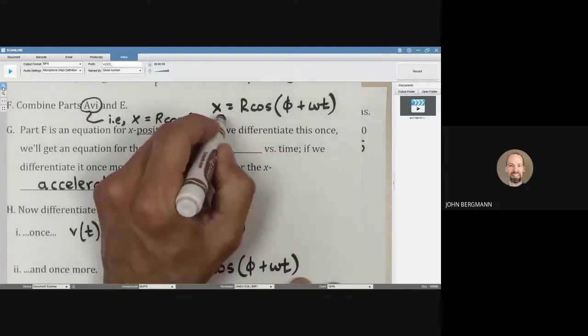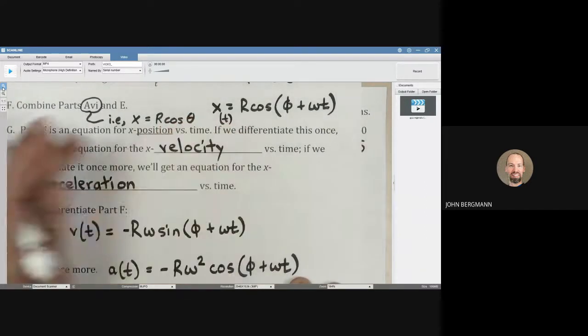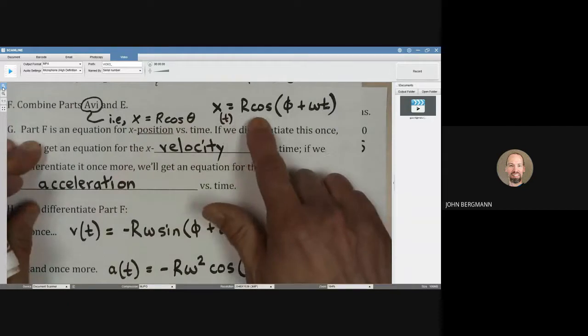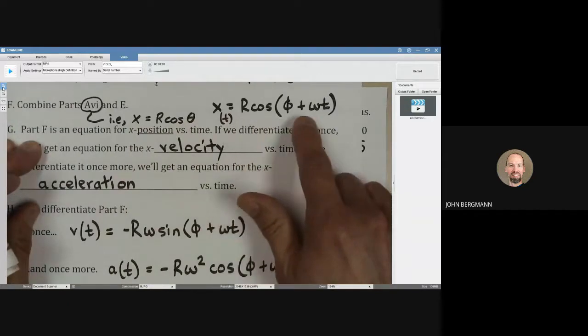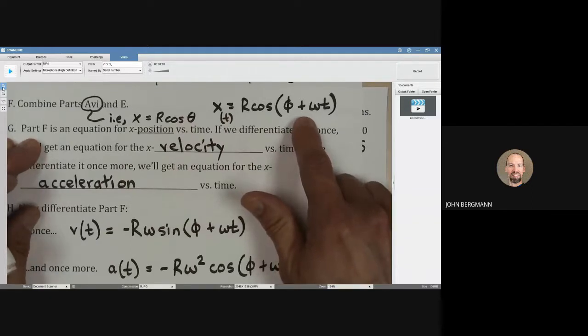we derived in the previous video that the x position, and actually this is x as a function of time, was equal to R times the cosine of this quantity. We're going to talk more about this quantity here in a later video, but that's a story for another day.